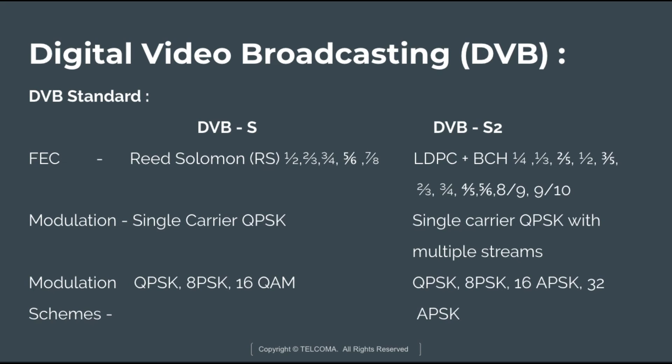Regarding modulation schemes: DVB-S uses single carrier QPSK (Quadrature Phase Shift Keying), whereas DVB-S2 also uses single carrier QPSK but with multiple options. The additional modulation schemes in DVB-S are QPSK, 8PSK, and 16QAM (Quadrature Amplitude Modulation), while DVB-S2 uses QPSK, 8PSK, 16APSK (Amplitude Phase Shift Keying), and 32APSK.